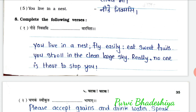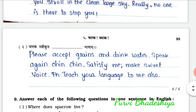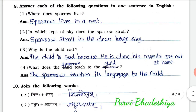Question number 8: complete the following verses. Dear students, see here — complete the following verses. I have mentioned the translation of this particular paragraph, but you have to write down the verse from your textbook. I have written the translation here for reference; keep this in mind. Now question 9: answer each of the following questions in one sentence in English. 1st: Where does sparrow live? — Sparrow lives in a nest. 2nd: In which type of sky does the sparrow stroll? — A sparrow strolls in the clean, large sky.